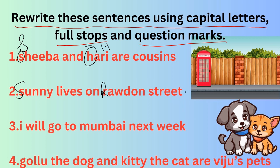Third: 'I will go to Mumbai next week.' I is the first letter of the sentence, so it should be in capitals. Mumbai is the name of a place, so Mumbai's M should also be in capitals. 'I will go to Mumbai next week.' The sentence is complete, so full stop.